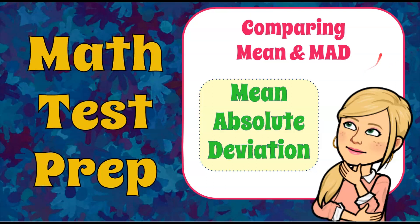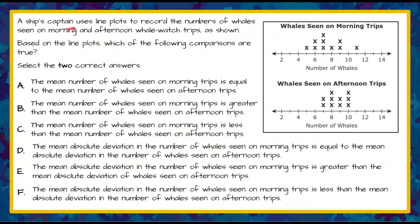It's the Magic of Math, and today we're going to be comparing mean and MAD, which is mean absolute deviation. Here's our question today. We have a ship's captain that uses line plots to record the number of whales seen on morning and afternoon whale watch trips. Those are our two line plots. Based on the line plots, which of the following comparisons are true? You're asked to select the two correct answers, comparing the mean number of whales and the mean absolute deviations between these two line plots.